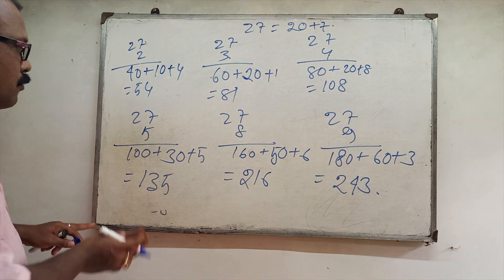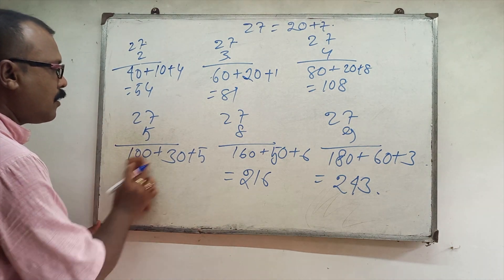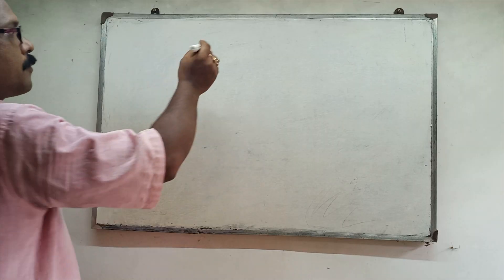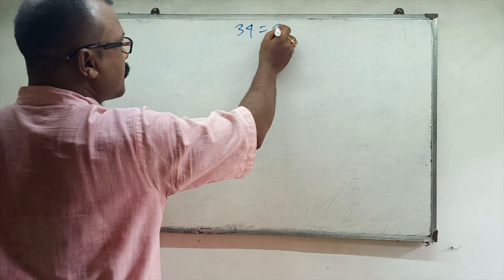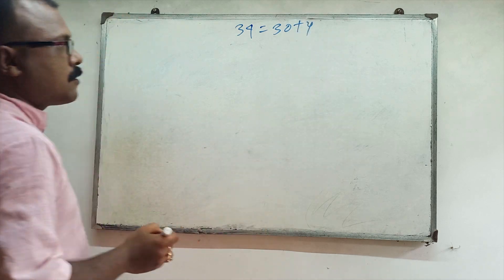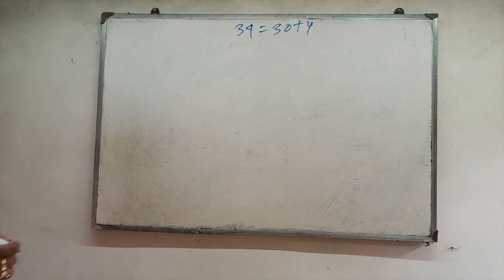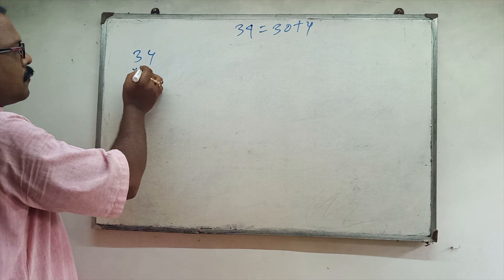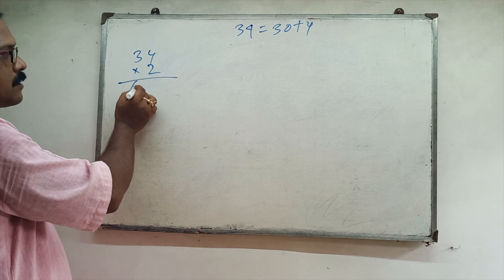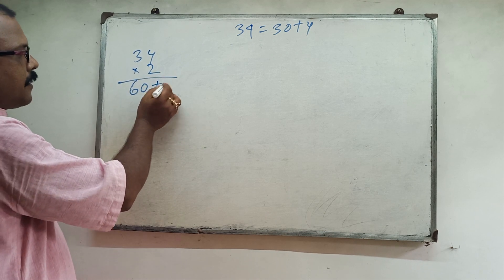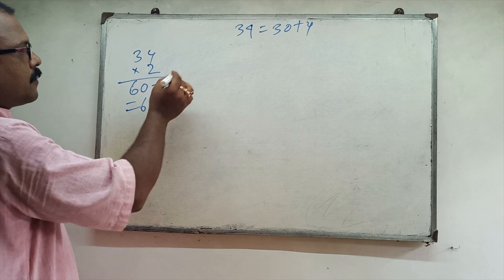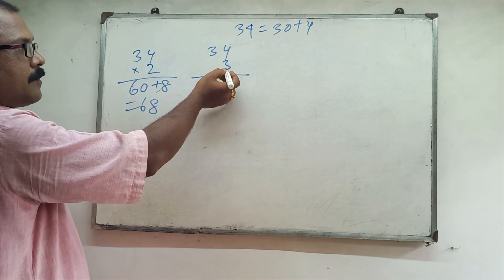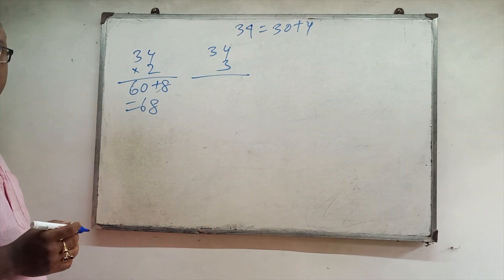So 34 equals 30 plus 4. 34 twos: 60 plus 8 is 68.